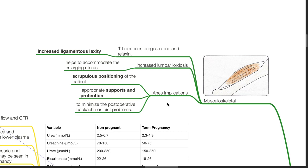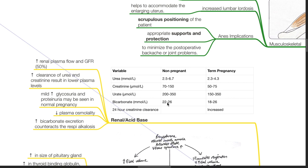Renal and acid-base: Increased renal plasma flow and GFR by up to 50% occur. Increased clearance of urea and creatinine results in lower plasma levels. Mild increase in glycosuria and proteinuria may be seen in normal pregnancy. There is decreased plasma osmolality. Increased bicarbonate excretion counteracts respiratory alkalosis.